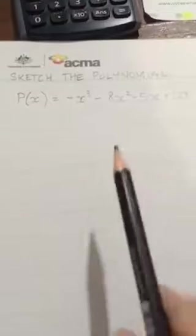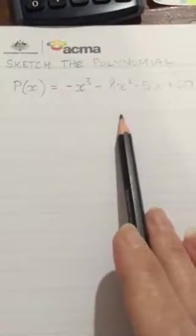So here we go, we're going to try and sketch the polynomial negative x cubed minus 8x squared minus 5x plus 50. I'm going to start with the factor theorem and trial and error to find our first factor.